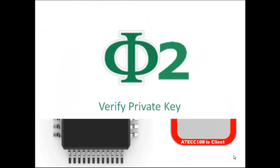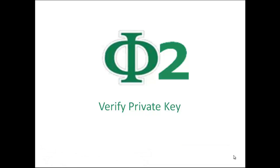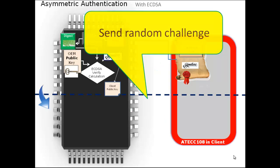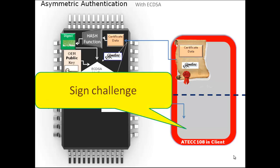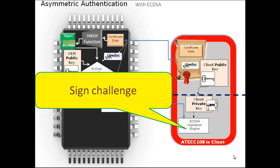Phase 2 is to verify the client's private key. The host sends a random challenge to the client. To create the signature, the client uses the client's private key and runs the signature engine — the ECDSA signature engine, which of course uses the ECC algorithm.